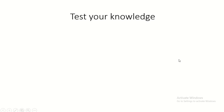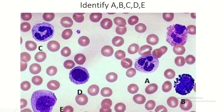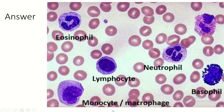Test your knowledge: Identify cells A, B, C, D, and E. The answer is: A is neutrophil — multiple lobes are observed. B is basophil. C is eosinophil. D is lymphocyte. E is monocyte.